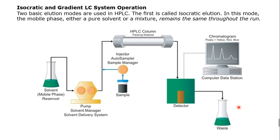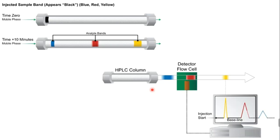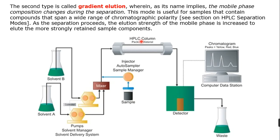HPLC is further classified into different types based on the mode of operation. One is isocratic and gradient LC. Isocratic means only one solvent is used, with a constant pressure applied throughout — one solvent, one pump, one column.